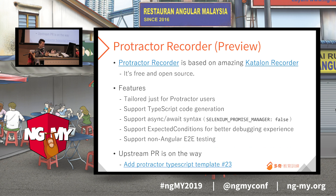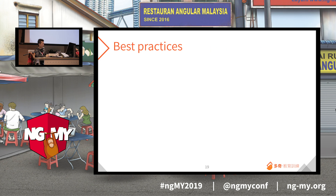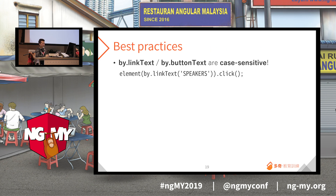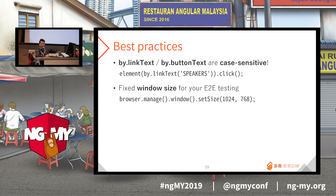Protractor Recorder really saves tons of time when developing end-to-end tests. Here are some best practices. The first: you must know that all link text, button text — any text-related comparison — will be case sensitive. That is very important for end-to-end testing. The second: window size matters. When you run end-to-end testing, the website could be responsive web design (RWD), so the window size really matters. Remember to set up the window size before running your end-to-end testing scripts.